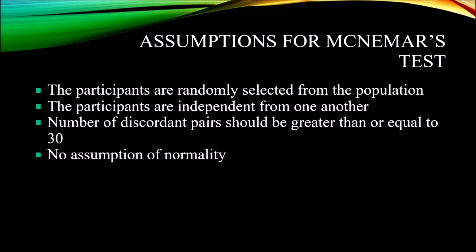We need the participants here to be randomly selected from the population. The participants are independent from one another. And the number of discordant pairs should be greater than or equal to 30.